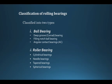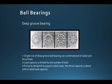These are the different types of rolling contact bearings available in industry. The first kind is ball bearing, where the rolling element is a spherical ball. Under ball bearings we have deep groove ball bearings, filling notch ball bearings, and angular contact ball bearings. The second category is roller bearings, where instead of a spherical ball, the rolling element is cylindrical, needle-shaped, or tapered.